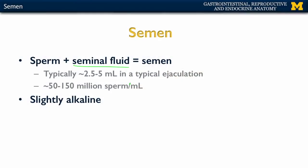A typical ejaculation is about 2.5 to 5 milliliters, and within that semen there are typically about 50 to 150 million sperm per milliliter.